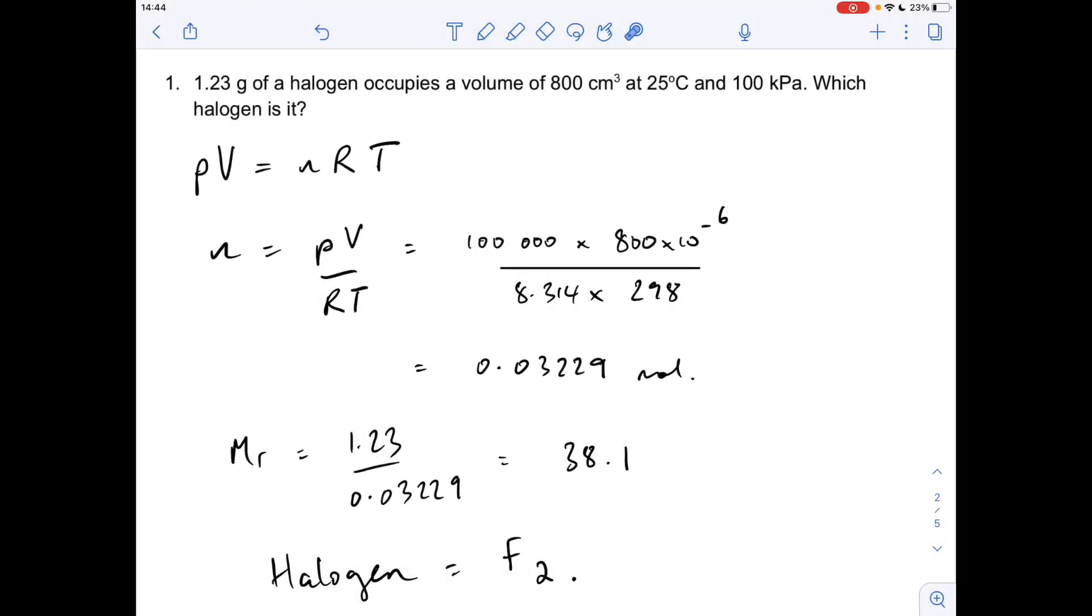Okay, so question 1 is an ideal gas question. We've got volume, temperature, pressure, and the mass of the halogen. So it's PV equals nRT. We're going to find the moles of the halogen, and then divide the mass by the moles and get the MR. And obviously we can work out which halogen it is from there.